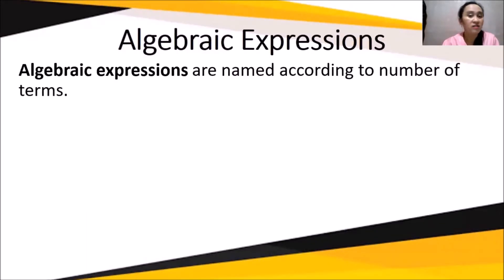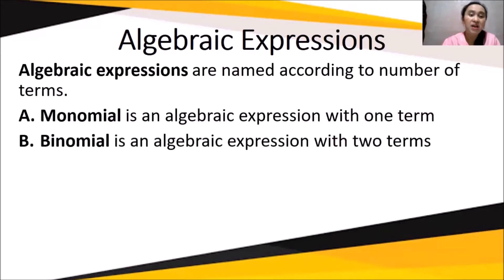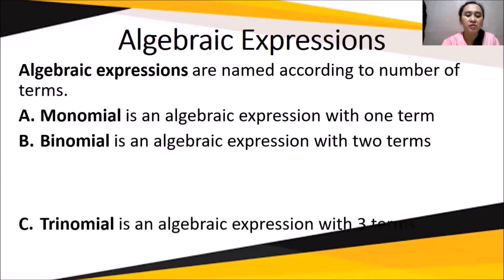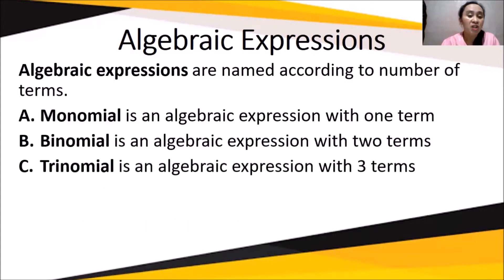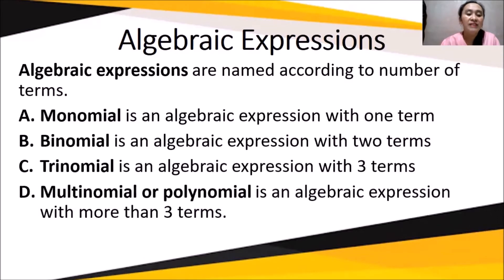Algebraic expressions are named according to the number of terms. A monomial is an algebraic expression with one term. A binomial is an algebraic expression with two terms. A trinomial is an algebraic expression with three terms. A multinomial or polynomial is an algebraic expression with more than three terms.